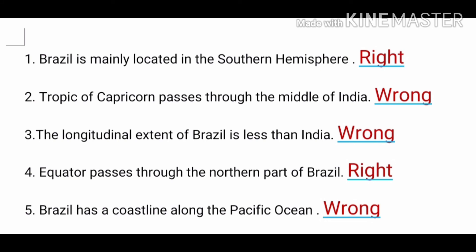Question number three: say the sentences right or wrong. First question — Brazil is mainly located in the southern hemisphere. Answer: Right. Second one — Tropic of Capricorn passes through the middle of India. Answer: Wrong. The Tropic of Cancer passes through the middle of India.